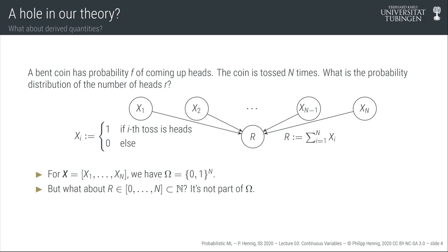Here our definition of probabilities breaks down. The set of atomic events omega consists of all binary strings of length n. But the variable r we want to talk about isn't an element of this elementary space — it's a natural number between 0 and n, which is a different space than omega. We haven't defined a rule yet that allows us to talk about such derived variables, formed by taking sums or other algebraic operations on elementary events.